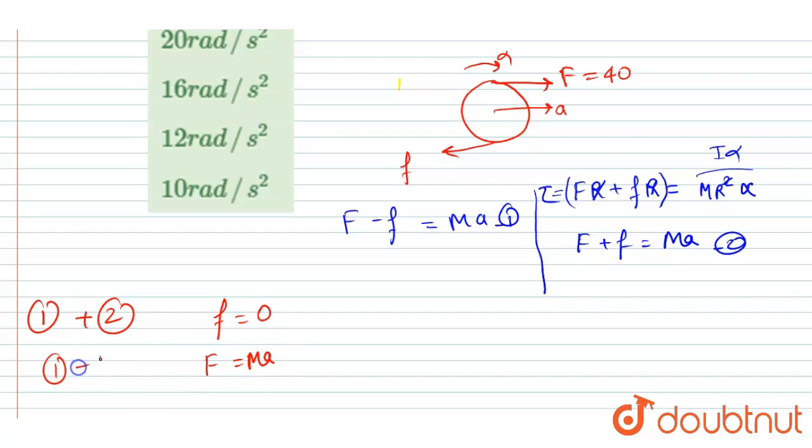Then also you will get to know the friction f force is zero and capital F will be equals to m*a. Once you can add and once you can subtract and you will get these two results. Now we have the value of f.